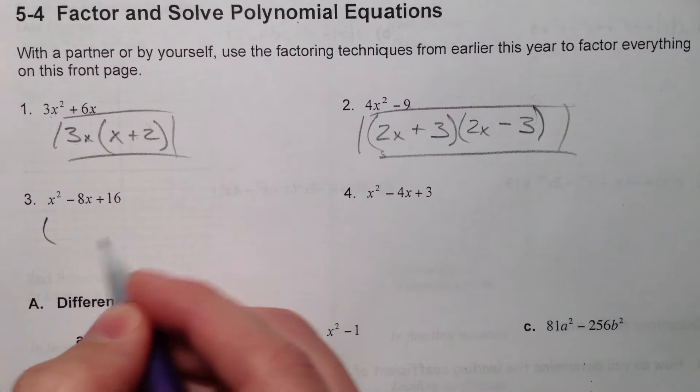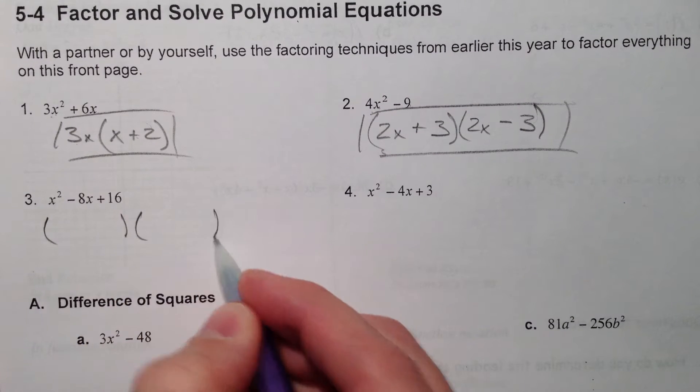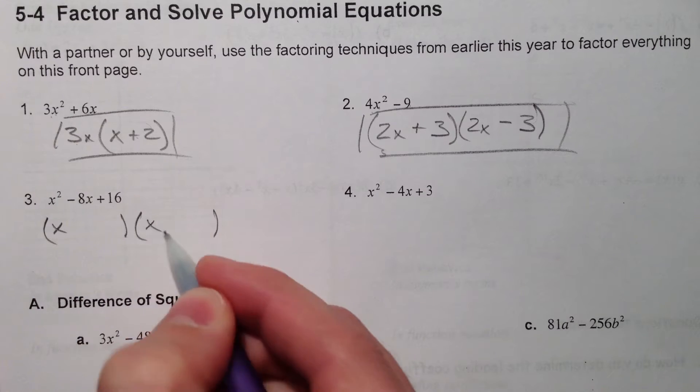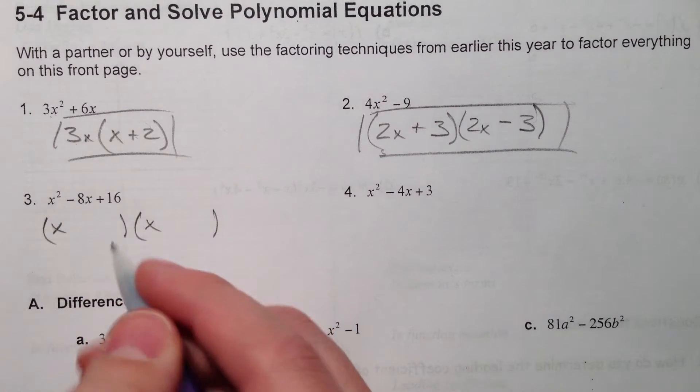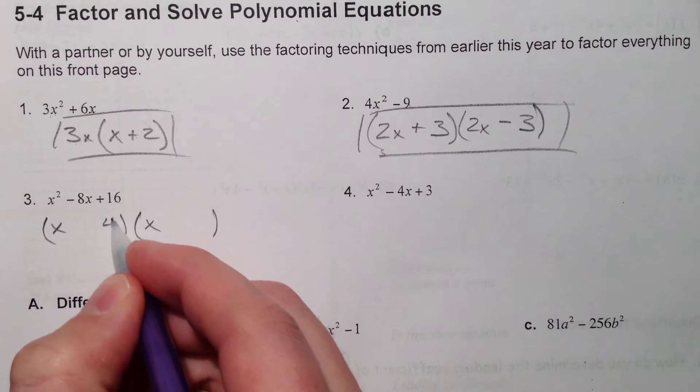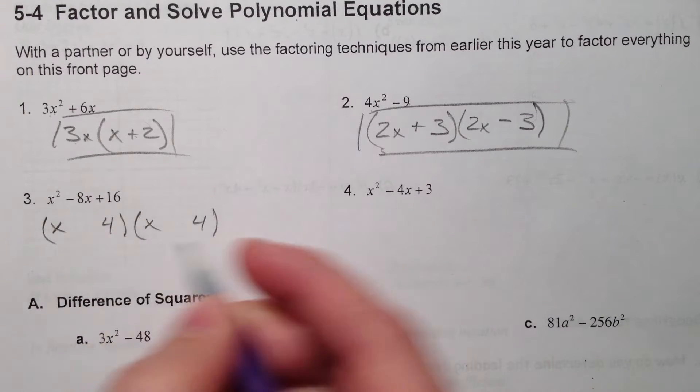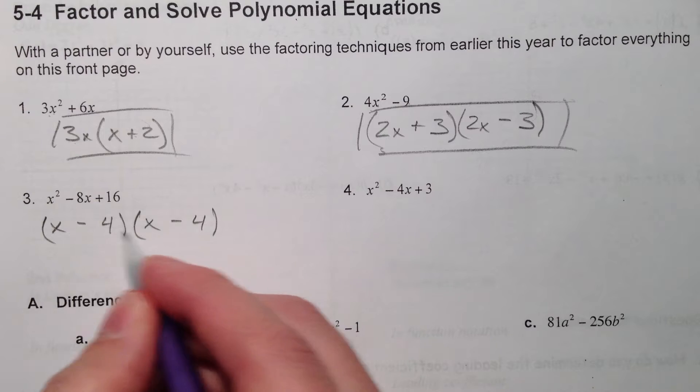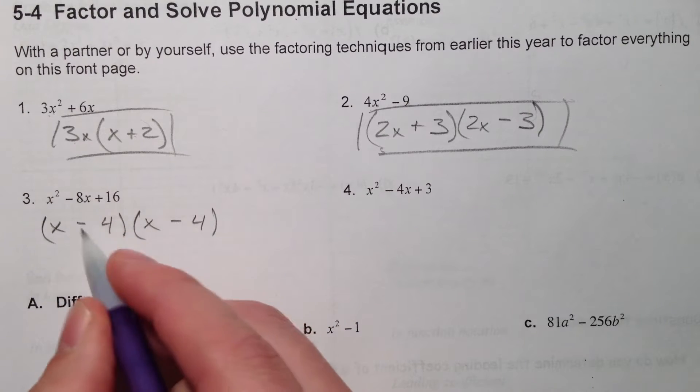And this last kind, we get x and x, and we need it to multiply to 16. 4 and 4 multiply to 16, 8 and 2. But if we put minus 4 and minus 4, we get minus 8x.